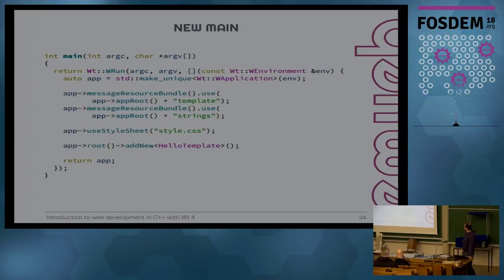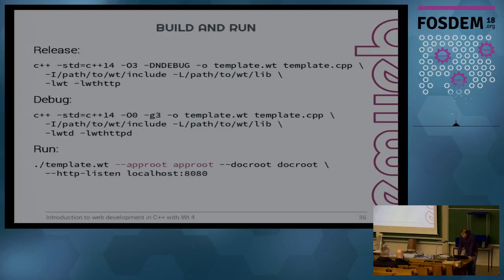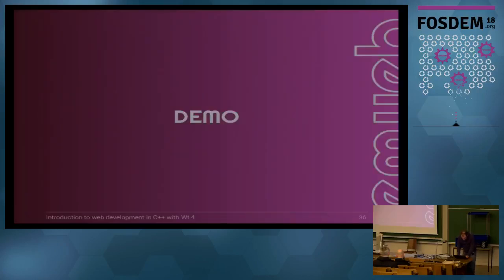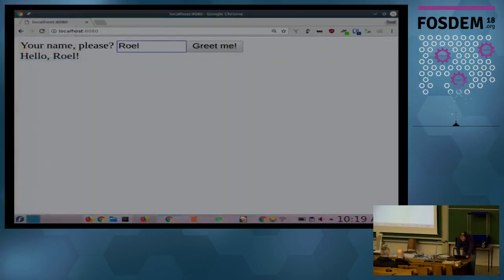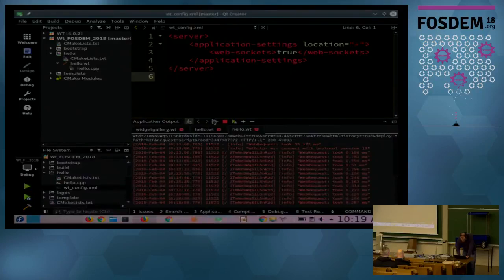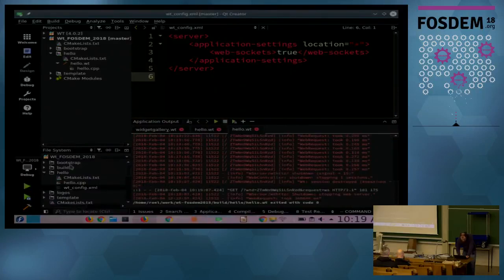We connect our signals like before, and the new main function just handles loading the message resource bundle, style sheets, and then creates our HelloTemplate widget. Building and running is the same, except now you have to pass in the app root so it knows where to find the template files.